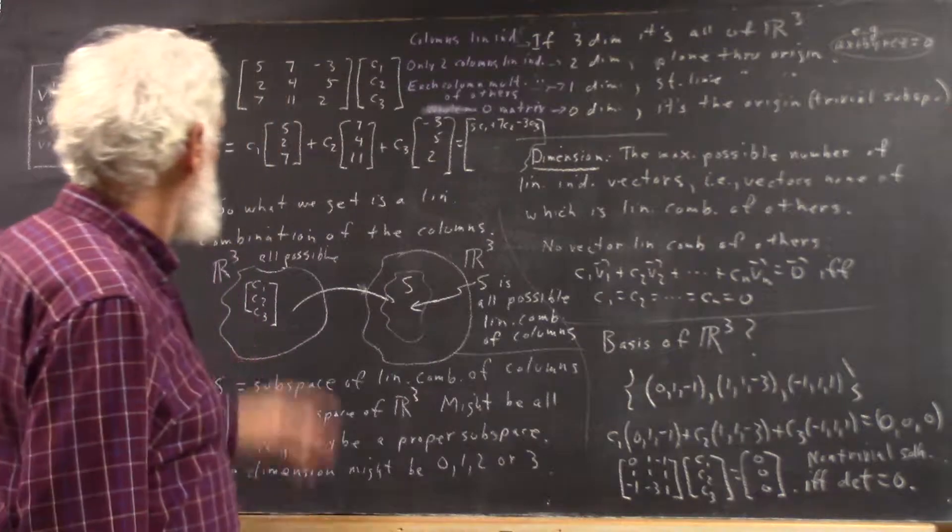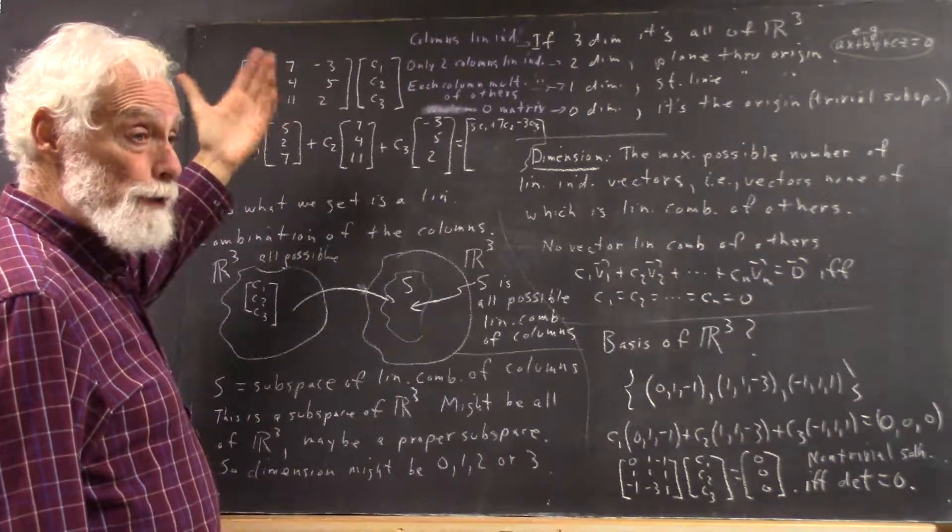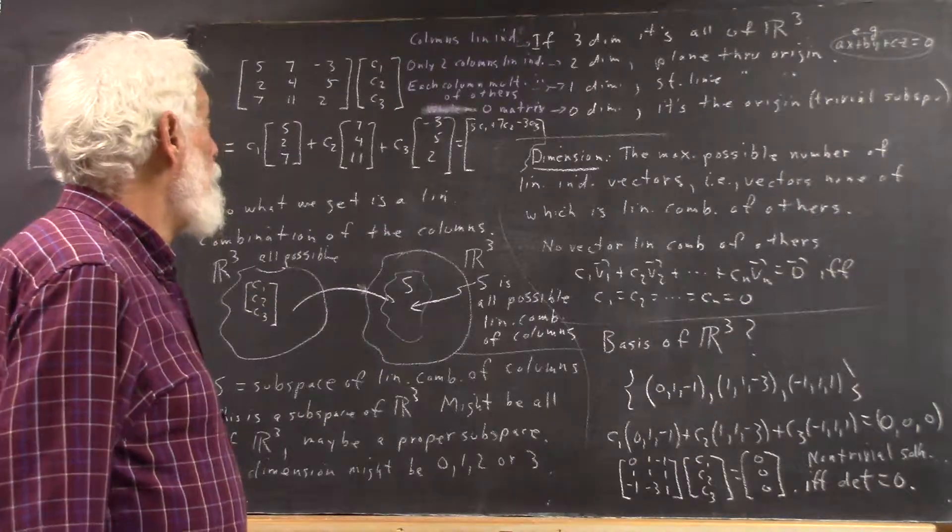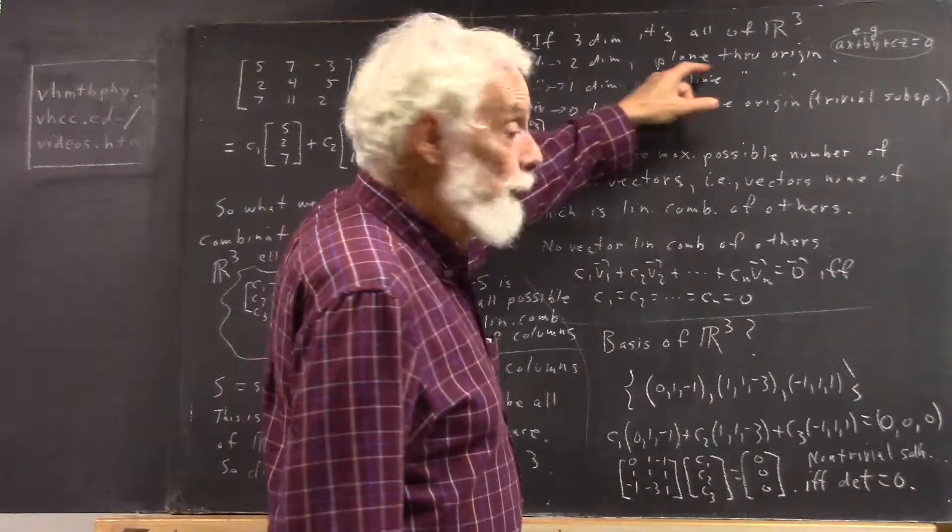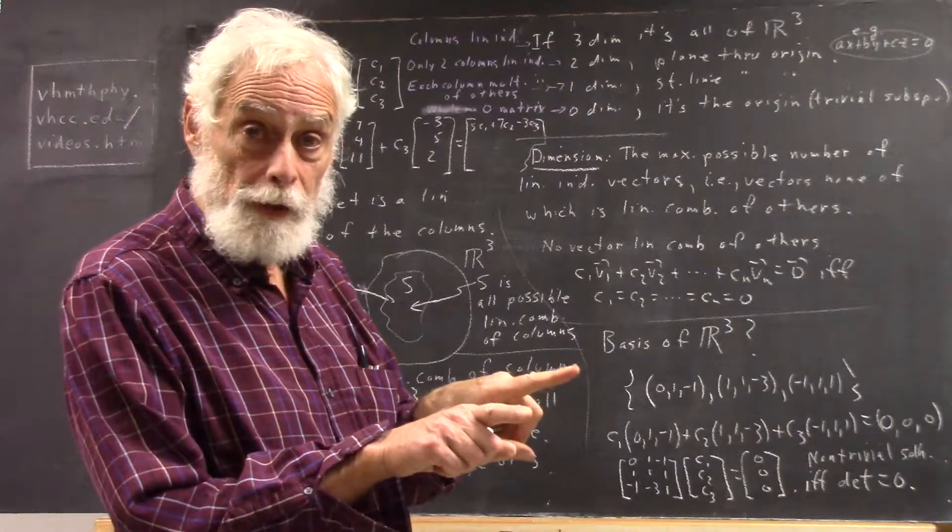So if your columns have only two linearly independent columns here, you get a two-dimensional plane because you can have at most two linearly independent vectors in any plane.